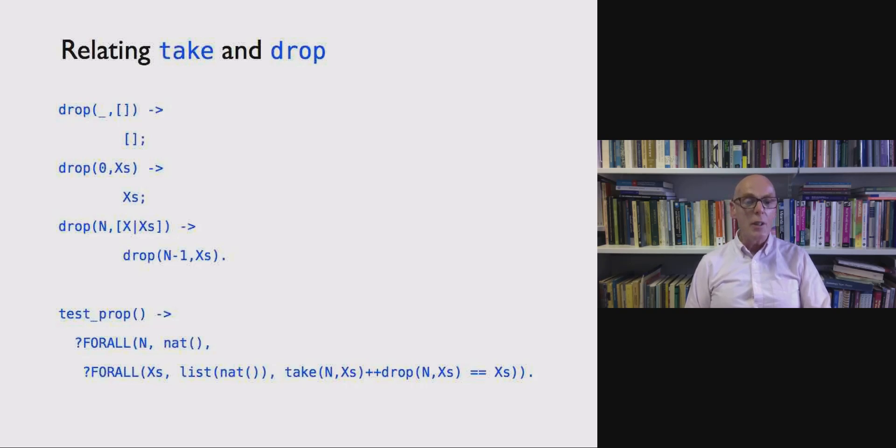So together with the property of the length, that gives us one defining property of take. If we define drop as if you like the converse of take, drop drops N elements from the list or as many elements as it can from a list. And we have a nice property relating take and drop. It says if you take N elements of X's and then join that together with dropping N elements from X's, you get X's back. So take and drop together, split the list in two. And if we join them back together with the plus plus, the list concatenation operator, we get back where we started. And that's another property for us to test.